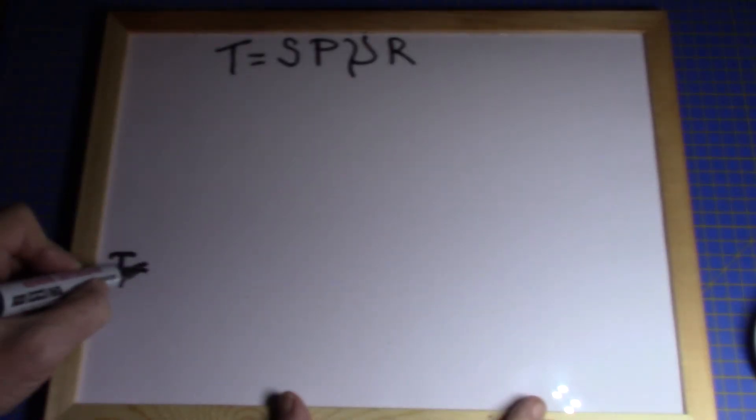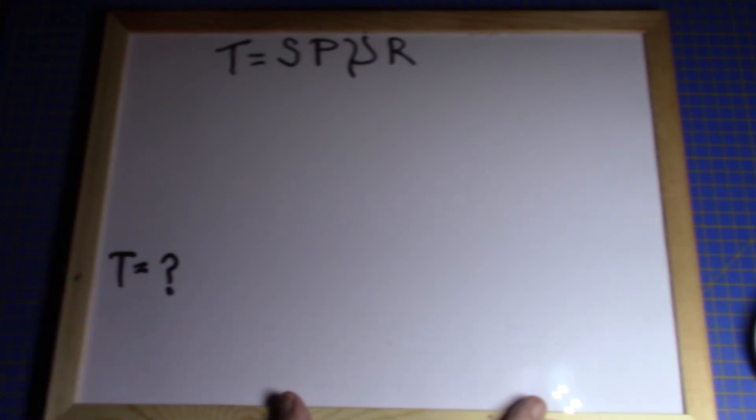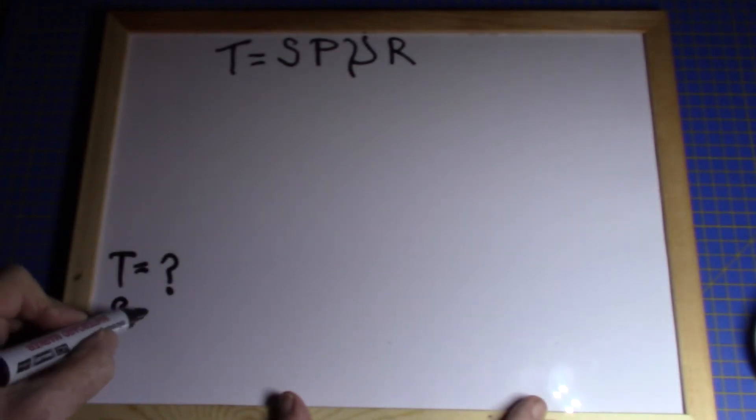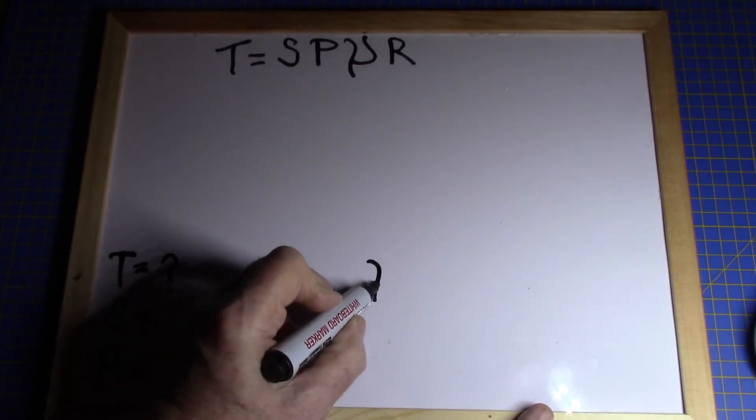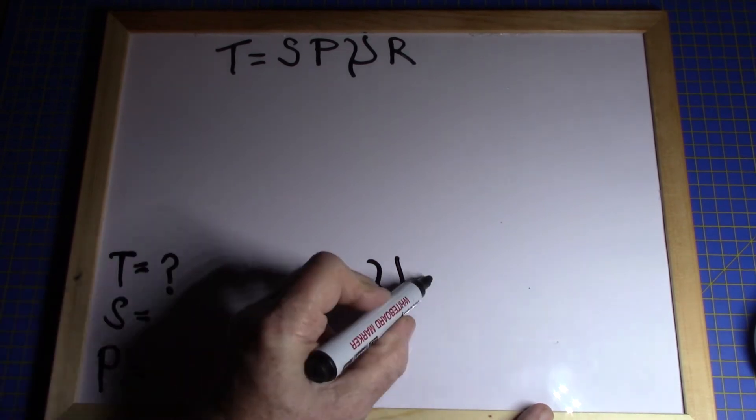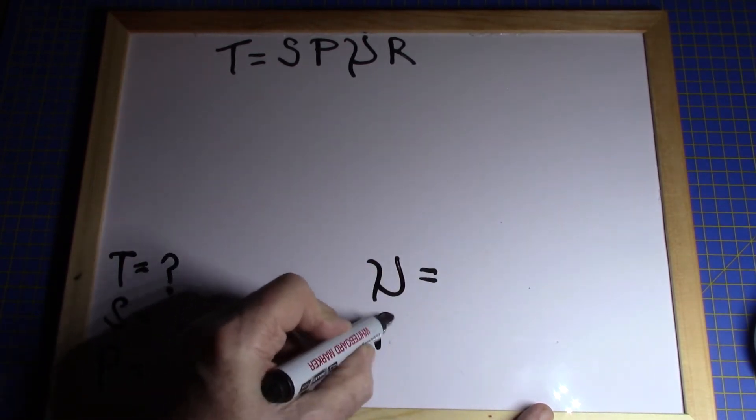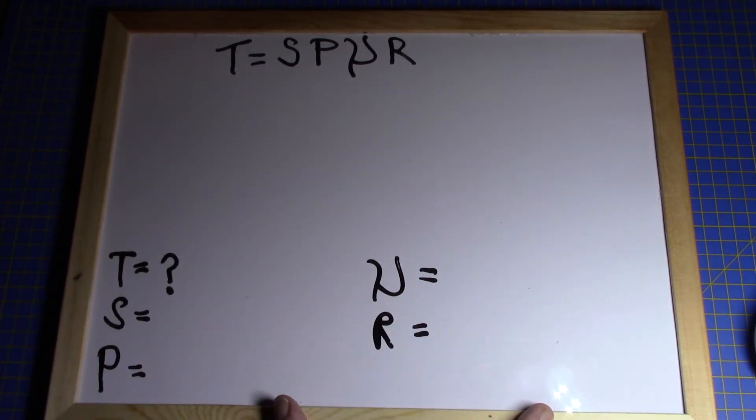All you have to do is get the figures that you're given in the question and throw them into that formula. You might find it handy to just scribble them down somewhere. T equals question mark, that's what you're being asked. S is the number of surfaces, P is the pressure plate force, μ is the coefficient of friction, and R is the mean effective radius.